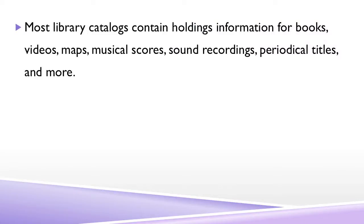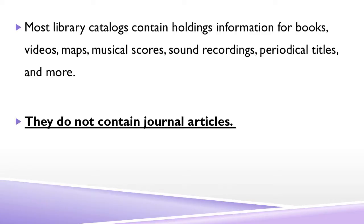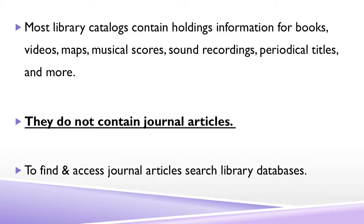Most library catalogs contain holdings information for books, videos, maps, musical scores, sound recordings, periodical titles, and more. They do not contain journal articles. To find and access journal articles, search library databases.